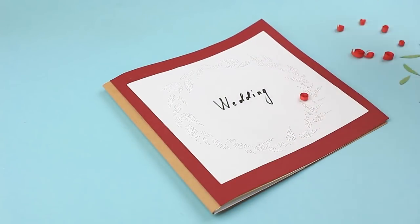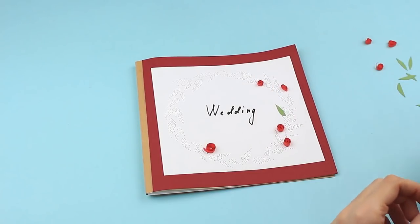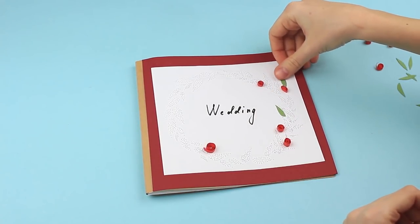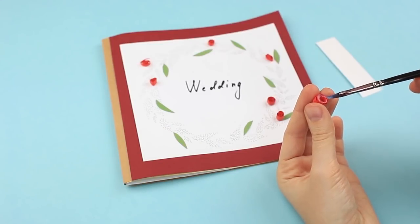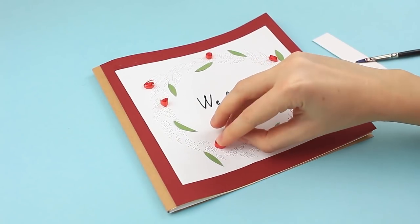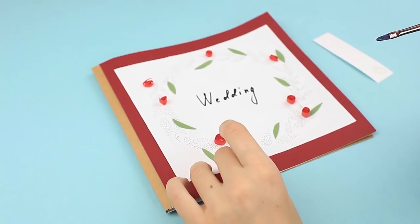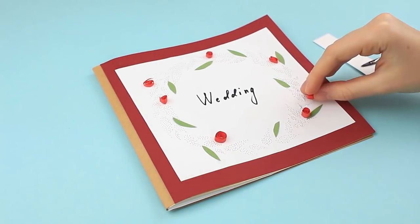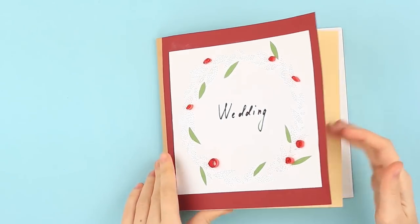Let's place the roses and green leaves on the wreath thinking over the composition. Attach the embellishments. Carefully add glue with a brush. Done! We've made a cute wedding scrapbook to keep wonderful photos of happy wedding moments.